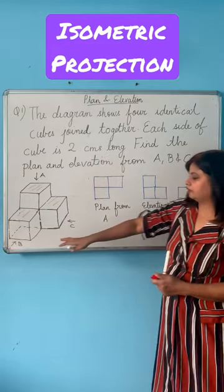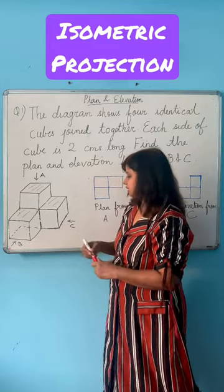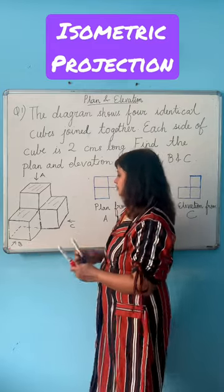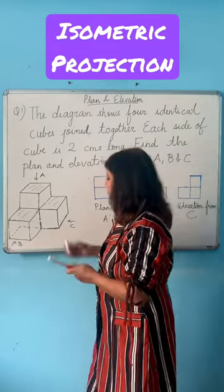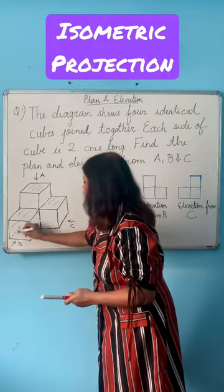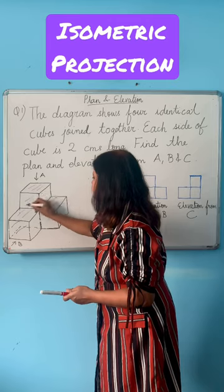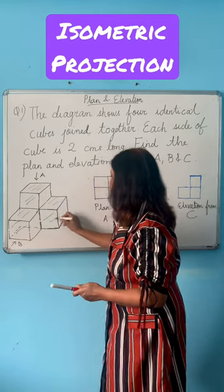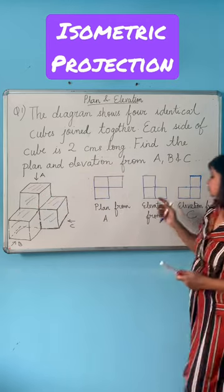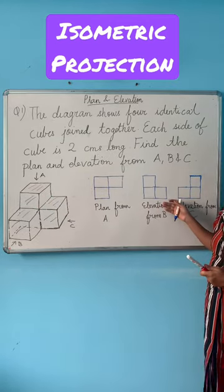Now from B, which is the front elevation, what you will be seeing? You will be seeing this side, this side, and this side. So that is the elevation from B.